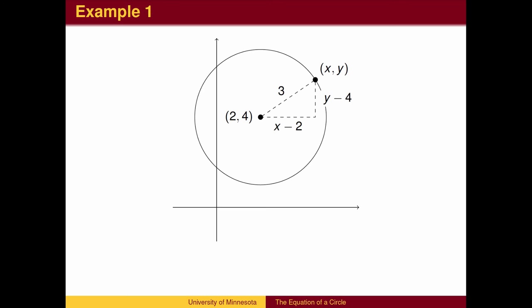Here is a picture of the circle. The radius is 3. We calculate the x-distance and y-distance by subtracting coordinates. The Pythagorean Theorem then gives us the equation.